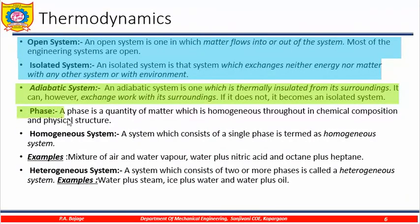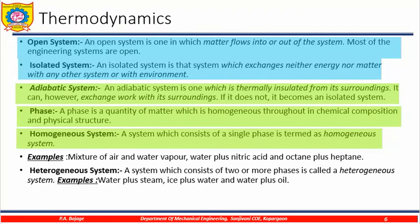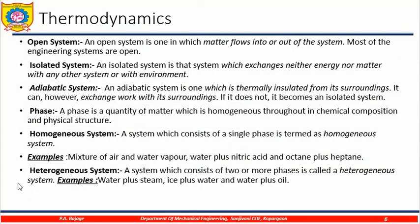What is a phase? A phase is a quantity of matter which is homogeneous throughout in chemical composition and physical structure. A homogeneous system consists of a single phase. Examples include a mixture of air and water vapor, water plus nitric acid, and octane plus heptane. A heterogeneous system is a system which consists of two or more phases. Examples include water plus steam, ice plus water, and water plus oil.